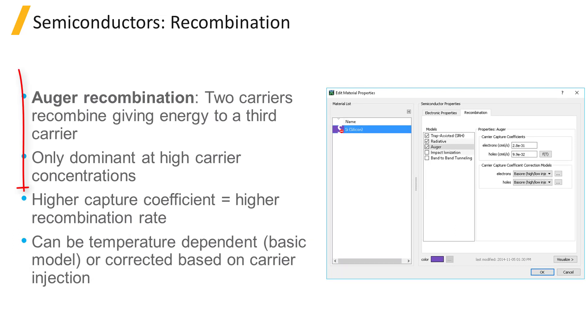Auger transitions are three-particle transitions in which two carriers recombine and transfer energy and/or momentum to a third carrier. Auger recombinations depend only on carrier density and become significant only at high carrier concentrations. The recombination rate is described by a capture coefficient, for which a higher value means a higher recombination rate.